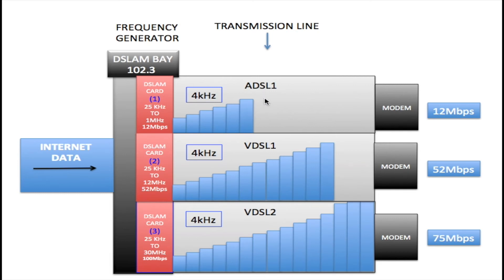As the frequencies get higher, we've taken up more bandwidth, so as frequency gets higher the speed is also getting higher, because we have 56 kilobits of data in each bin. The more bins we can add, the more data we can send to the customer, but we're also taking up more bandwidth. There's no such thing as unlimited bandwidth on a copper line — there's a limit. This is the correlation between frequency, bandwidth, and speed on the ADSL1 line.